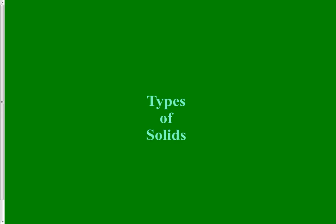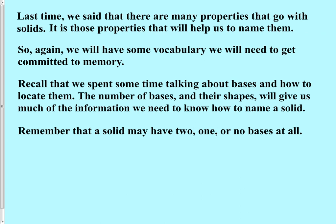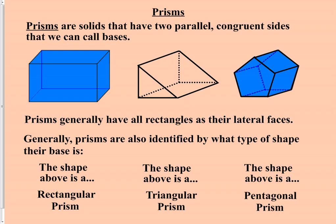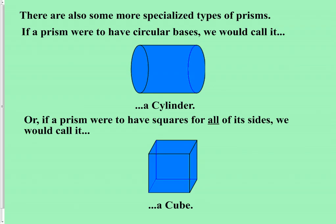The next day we looked at particular types of solids and got a naming system going. Figures that have two bases are referred to as the family of prisms, and prisms are named according to what type of shape their base is — triangular prisms, rectangular prisms, pentagonal prisms, hexagonal prisms, and so on. If the prism has circular bases, we more specifically call it a cylinder. And if a rectangular prism has all of its faces being squares, we more specifically call it a cube.